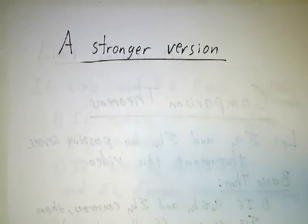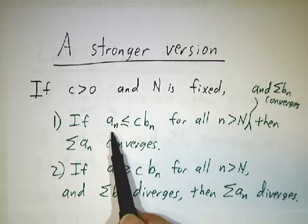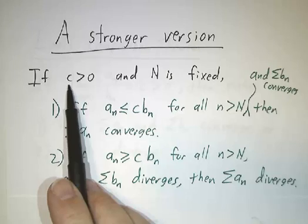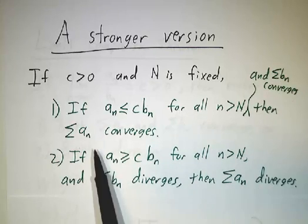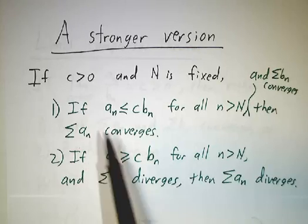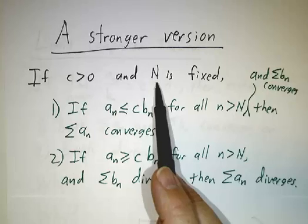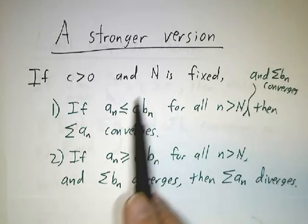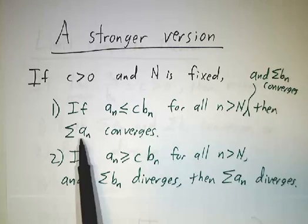Now we're going to soup up this comparison test and come up with stronger versions of it. The first improvement is: a_n doesn't really have to be less than b_n — it just has to be less than a multiple of b_n. So we pick a multiple c, and say if a_n is less than c times b_n, and the sum of b_n's converges, then the sum of a_n's converges. And we don't even need it to be true for every value of n — we just need it to be true after a while. Forget about the first big N values; after that, if the a_n's are less than c times b_n and the b_n's converge, then the sum of the a_n's converges.